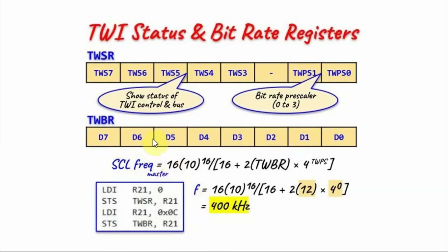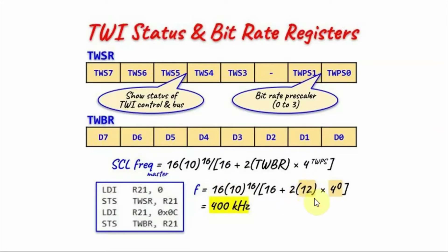Next we have the bitrate register, which stores an 8-bit value used in the calculation of the serial clock frequency of the master device. The equation used to calculate this frequency is shown here, where TWBR is the value of the bitrate register and the prescaler exponent is the value of the bitrate prescaler. For example, for a system clock frequency of 16 MHz, a TWBR value of 12, and a prescaler of 0, the serial clock frequency would be 400 kHz.